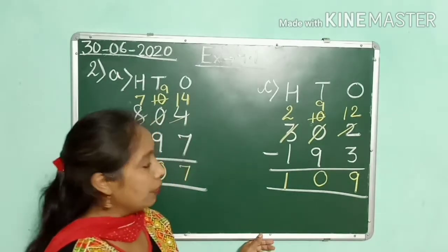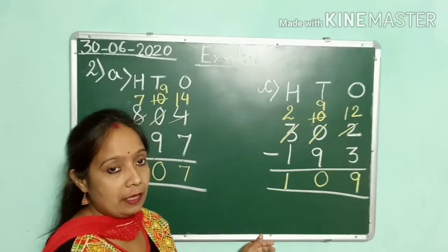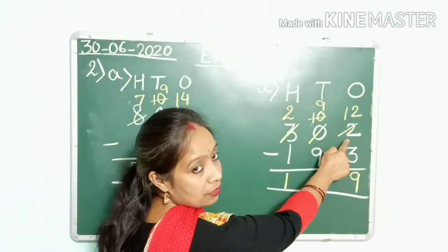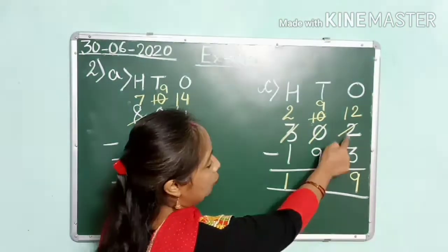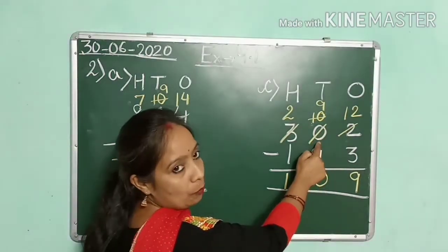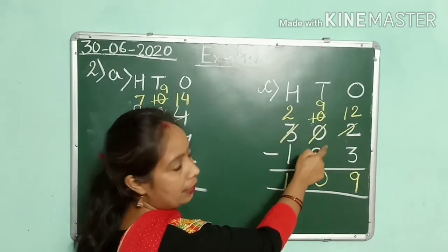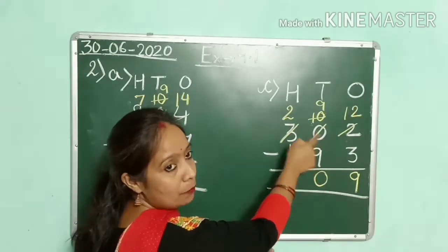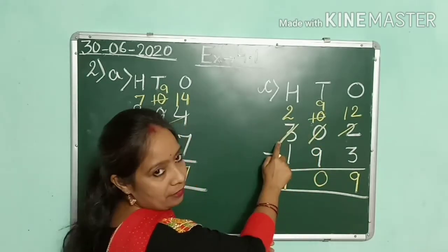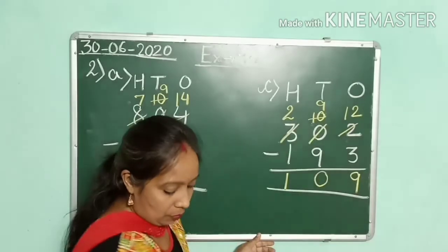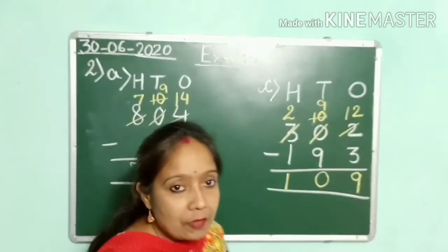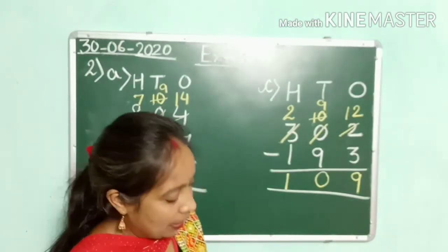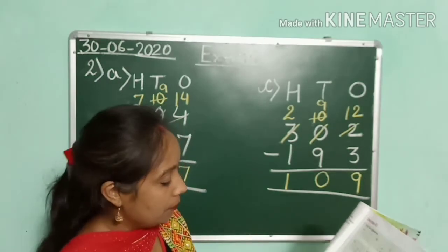I hope you are getting it, children. When this digit is smaller, you need to borrow from the 10s digit. And the 10s digit will borrow from the 100s digit. Take care. It will be more clear with more examples.